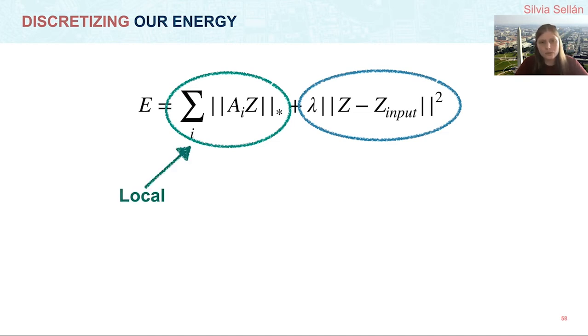The energy in our green circle, our developability energy, measures local information at each point. We are looking at the neighbors of each point to approximate the Hessian, so it is in some way a local quantity. Our data fidelity energy, on the other hand, measures a global quantity, the difference between two heightfields. This local-global duality in our energy makes it a perfect candidate for minimization via the Alternating Direction Method of Multipliers, also known as ADMM.